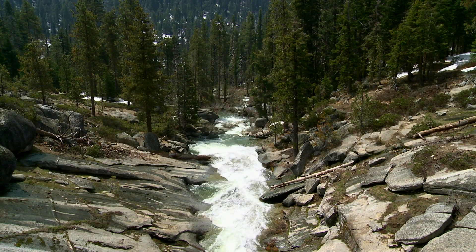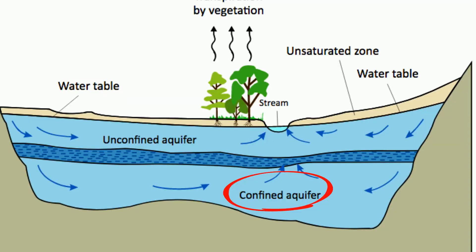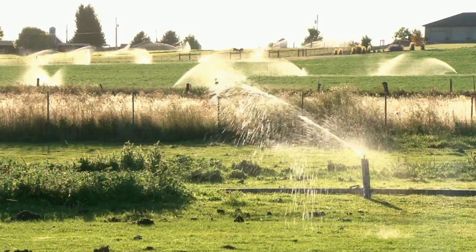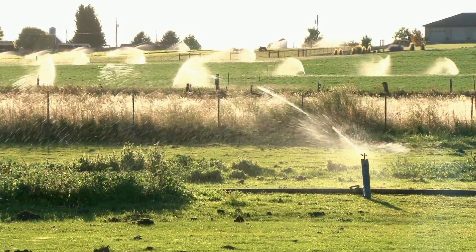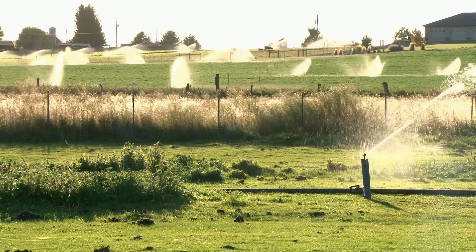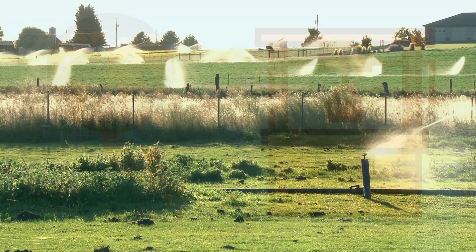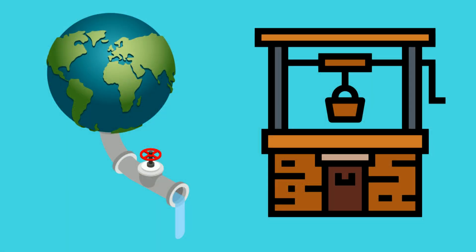However, some groundwater is so deep that it's difficult to get to. These bodies of groundwater are called confined groundwater. Humans depend on groundwater for drinking water and for growing crops. This groundwater can be reached by digging a well. There are thousands and thousands of wells throughout the world that provide drinking water and water for our crops.